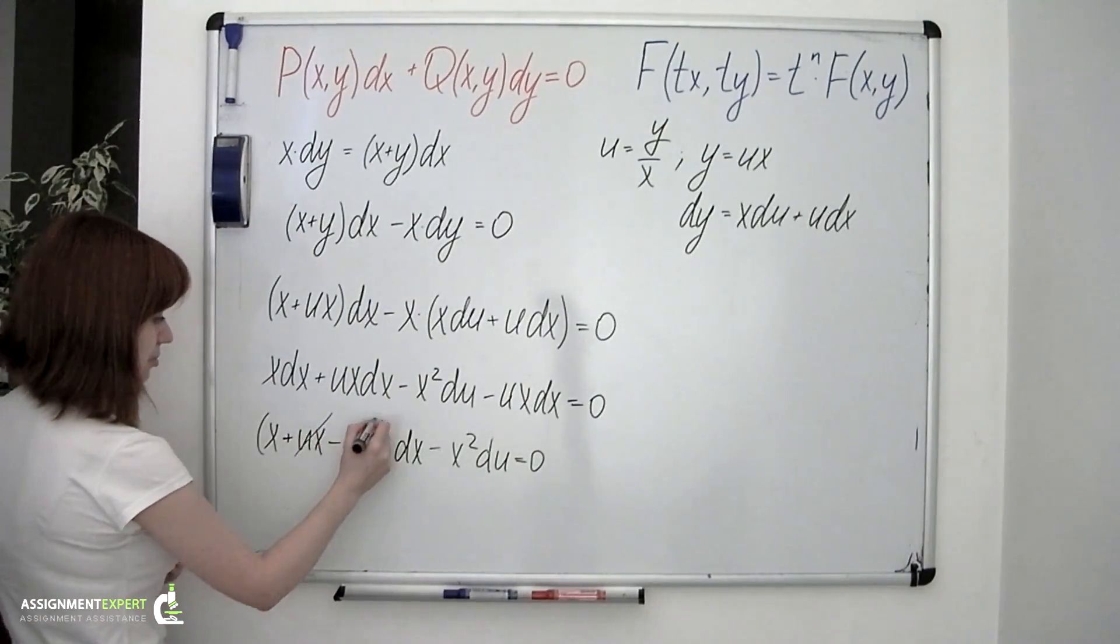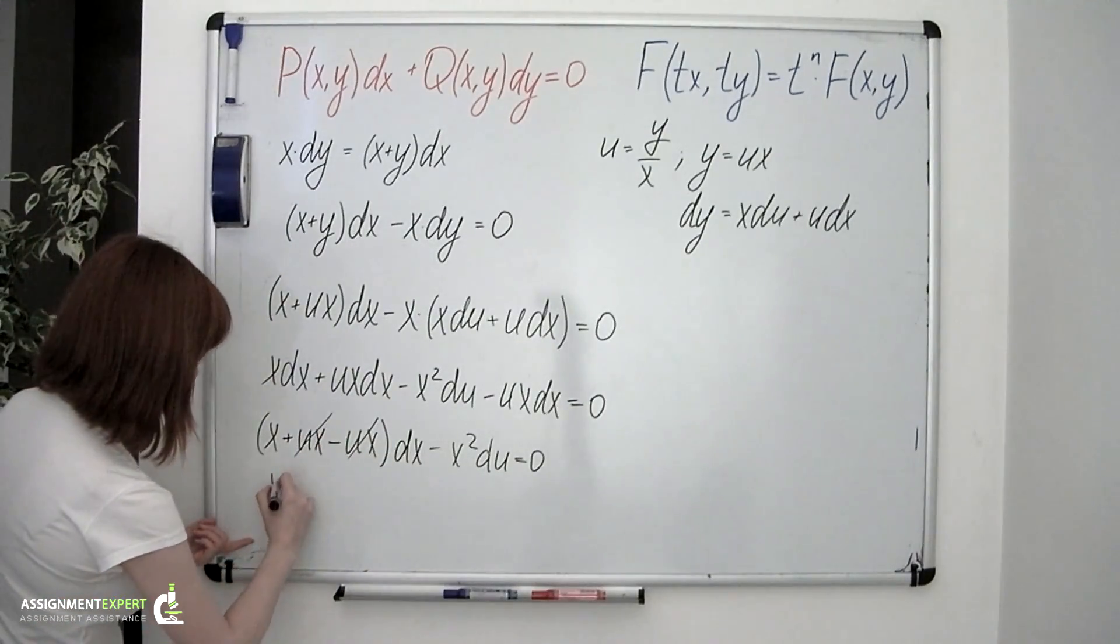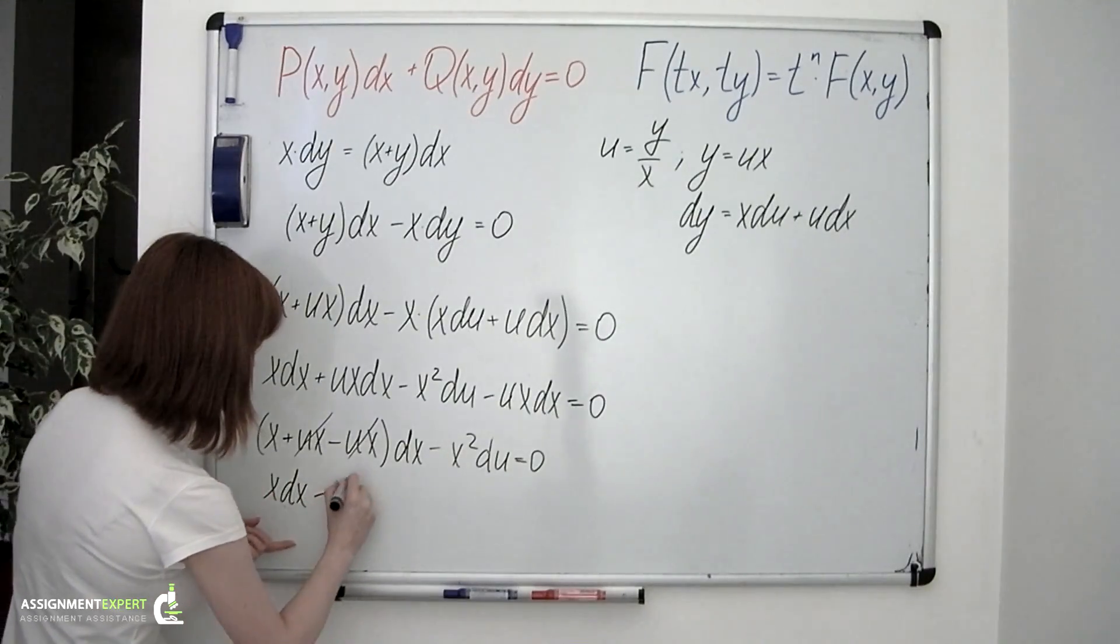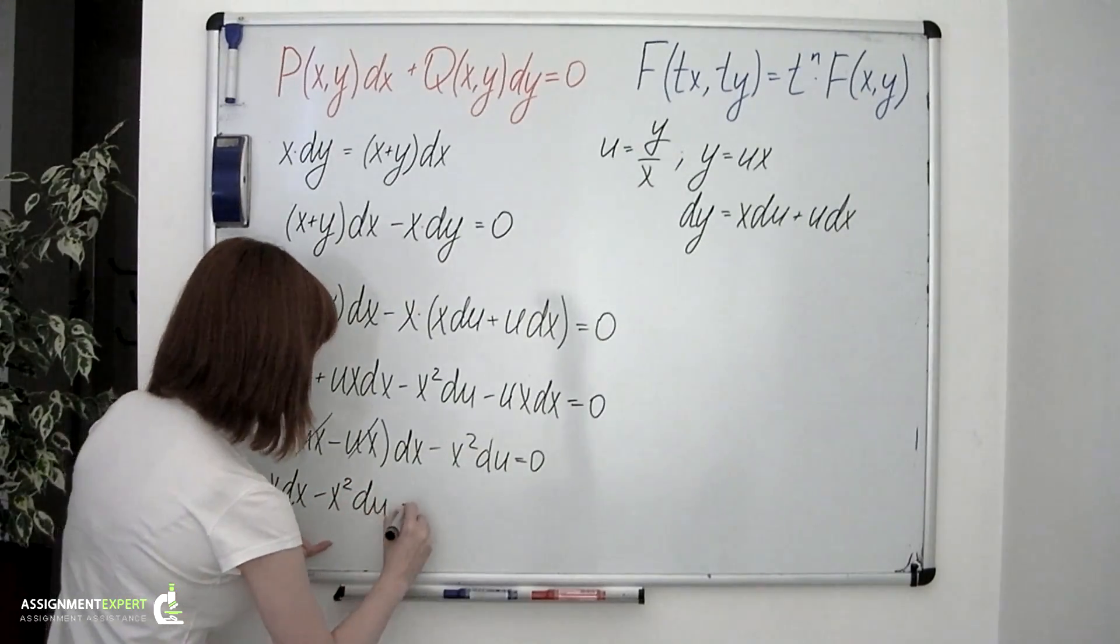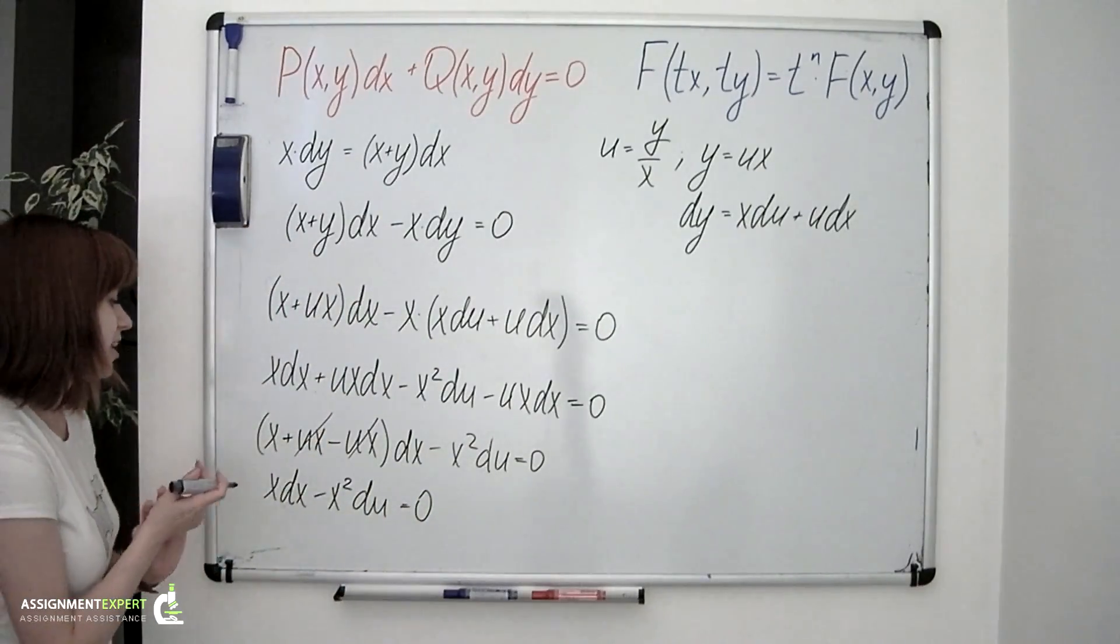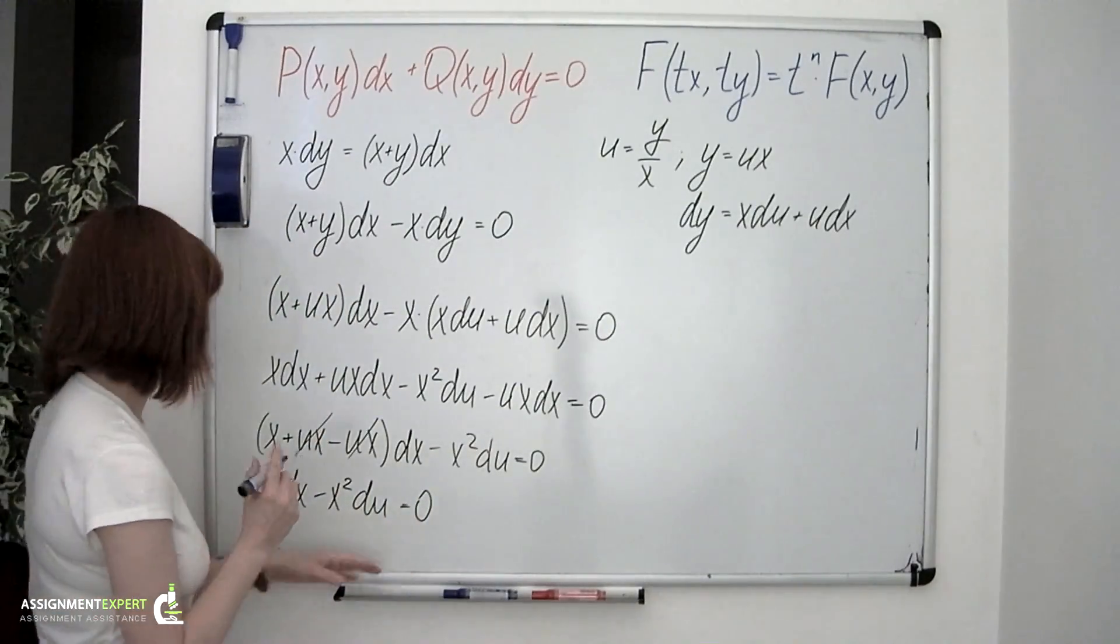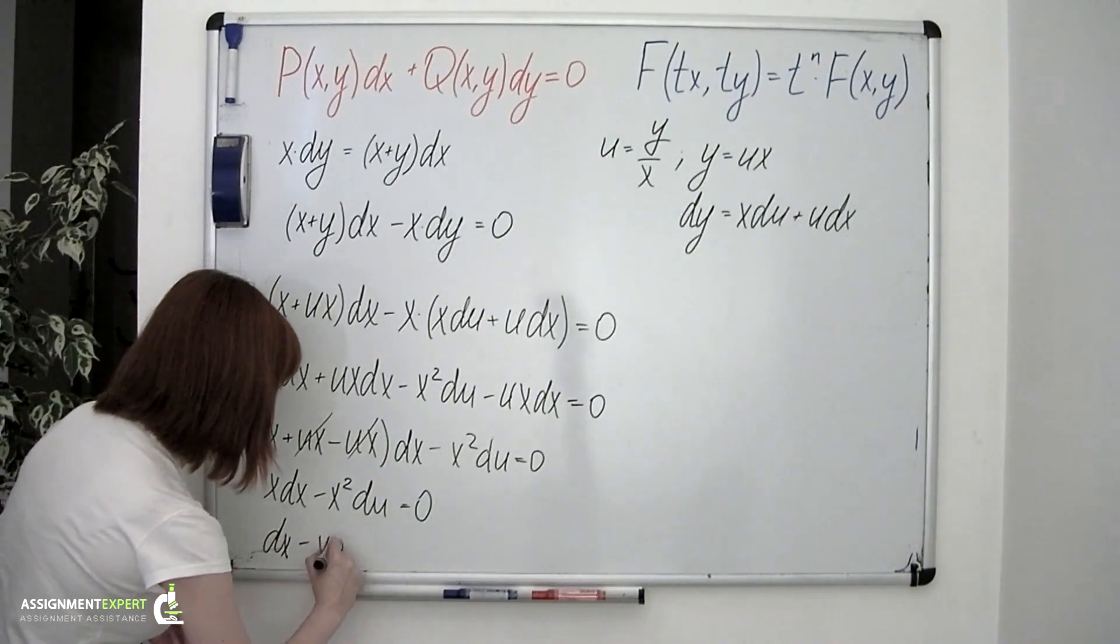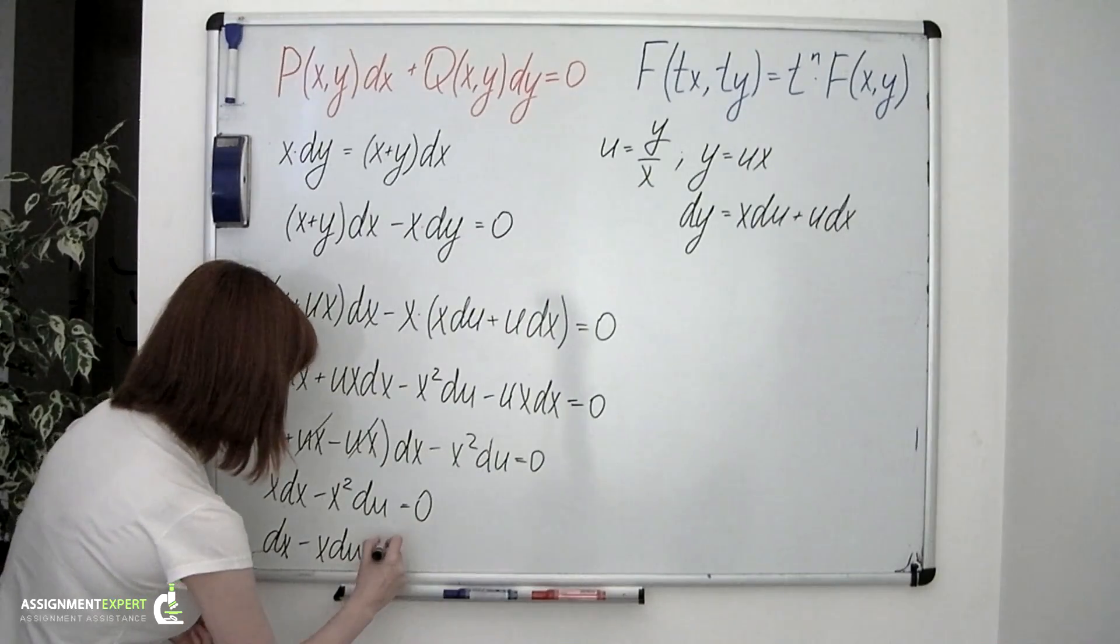Now these two summands cancel out, and we have x times dx minus x squared times du equals 0. We can divide both sides of this equation by x, and obtain dx minus x times du equals 0.